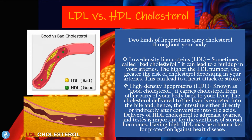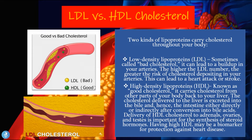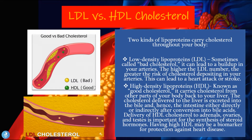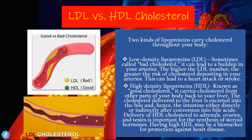High density lipoproteins or HDLs are known as the good cholesterol. They carry cholesterol from other parts of the body back to the liver, where it is excreted into the bile and intestine either directly or after conversion into bile acids. HDL cholesterol is also delivered to the adrenal glands, ovary, and testes, which is important for the synthesis of steroid hormones. Having a high HDL level may be a biomarker for protection against heart disease.